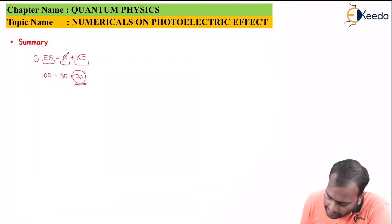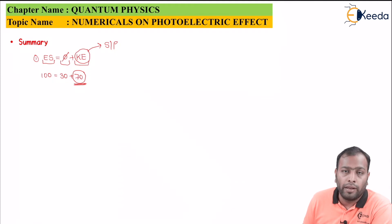Also this kinetic energy at times is also referred to as stopping potential. Now why is this referred to as stopping potential? Well there are certain cases wherein if this is the metal surface we want the electron to just get on the top of the surface.